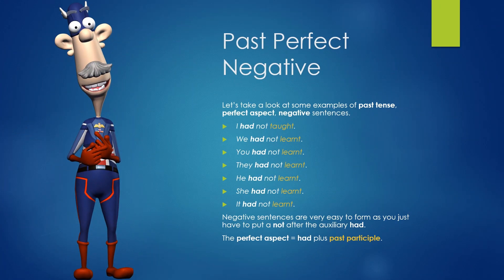Past Perfect Negative. Let's take a look at some examples of past tense perfect aspect negative sentences. I had not taught. We had not learnt. You had not learnt. They had not learnt. He had not learnt. She had not learnt. It had not learnt. Negative sentences are very easy to form as you just have to put a not after the auxiliary had. The perfect aspect is had plus past participle.